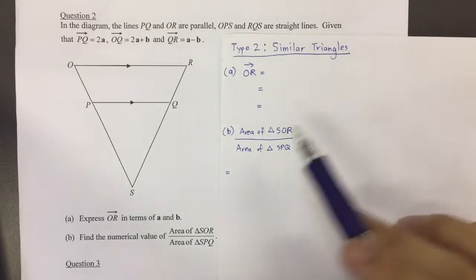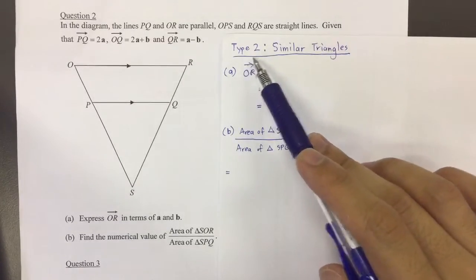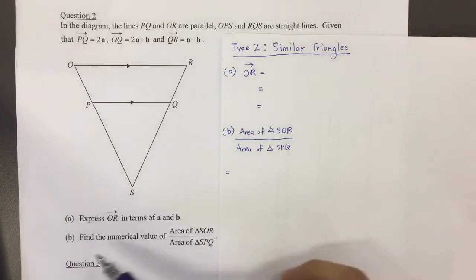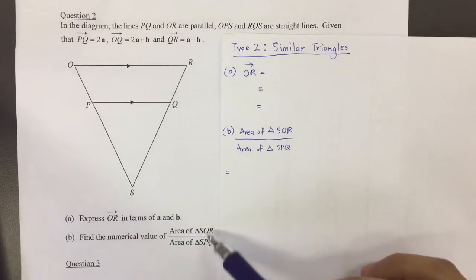Alright, so now we're going to do a question on vectors, and it's a type 2 kind of question where we actually make use of similar triangles to solve a type of question that looks like this, ratio of two areas.